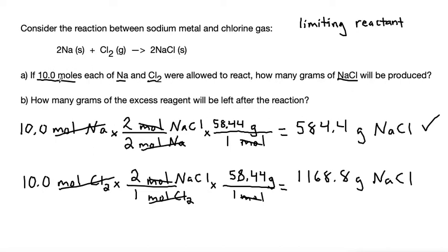And we just need to round this to 3 sig figs. So let's round to the 4 and the 4 behind it makes this 4 stay the same. It would be 584 grams of NaCl for part A.